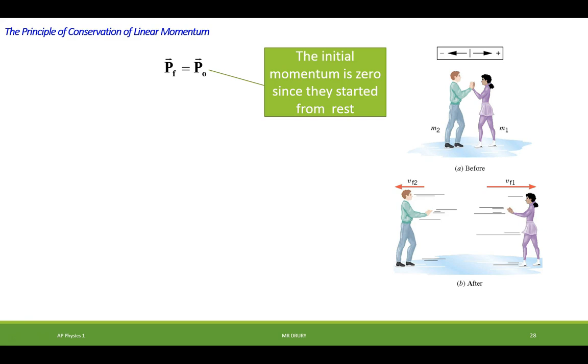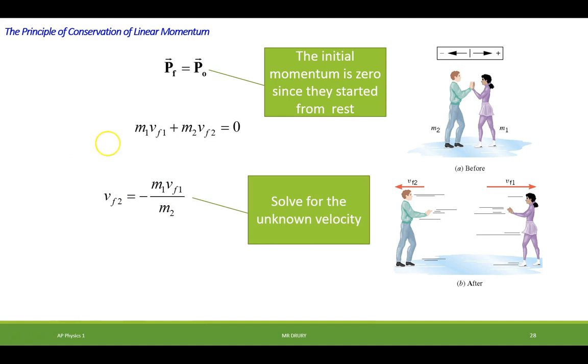The initial momentum of this is zero since they started from rest. So we know that whatever momentum the man has has to equal whatever momentum the woman has. One's going to be in the positive direction, one's going to be in the negative direction. And then we can solve for our unknown term, which is the final velocity of the man.